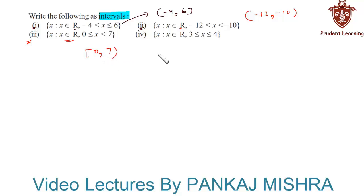In the last section, we have set X such that X belongs to real numbers and X is greater than or equal to 3 and less than or equal to 4. Well, the given set is a closed interval since 3 and 4 are both included. Hence it can be written as [3, 4]. So this completes our solution.